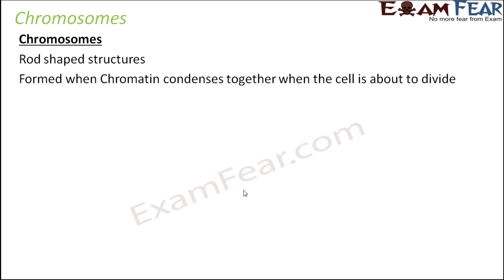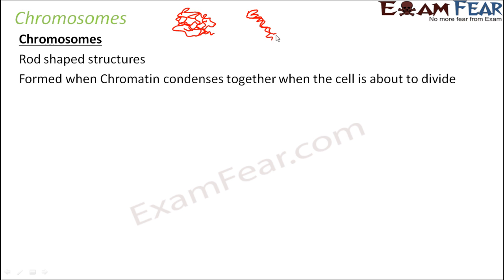Chromosomes are formed when chromatin condenses together when the cell is about to divide. So let us suppose these are your chromatin threads - they are all thread-like structures randomly arranged. Later, these same threads will assemble together to form a structure known as a chromosome.